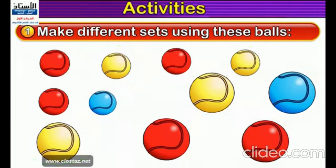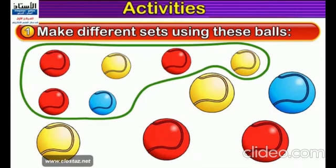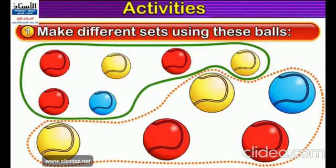Now I will put the big balls on one side and the small balls in another set. You can see all the small balls on one side — there are three red balls, two yellow balls, and one blue ball. Now I will put all the big balls on another side — two red balls, two yellow balls, and one blue ball. Students, you have made two different sets of balls in this activity. Now let's play another activity.